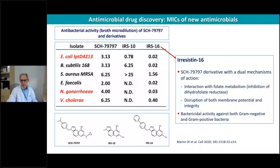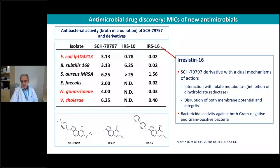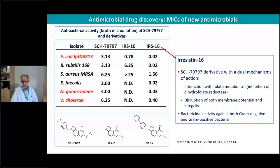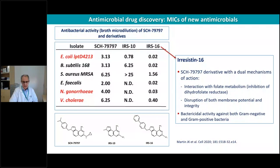Another compound is iresistin-16, a derivative of a scaffold compound with a dual mechanism of action — similar to trimethoprim with an interaction with folate metabolism, but also acting on the membrane potential of the bacteria. Because of this dual activity, the potency of this compound is very high, with MICs lower than or slightly above one microgram per mL across different gram-positives and gram-negatives.